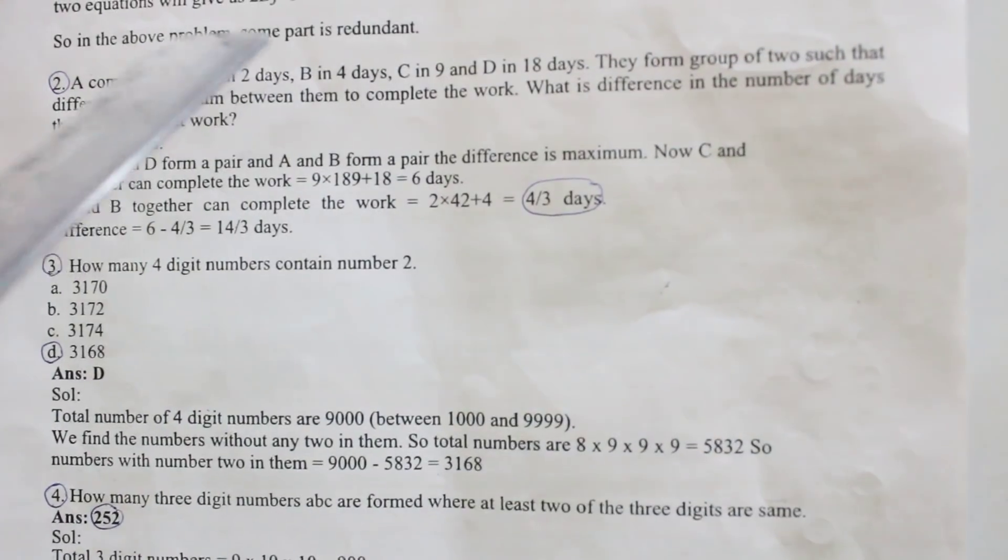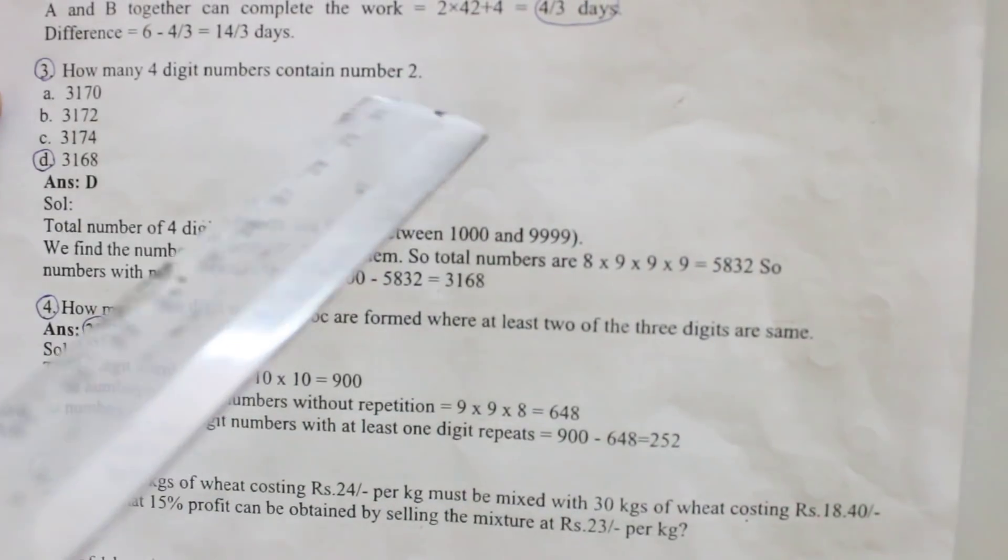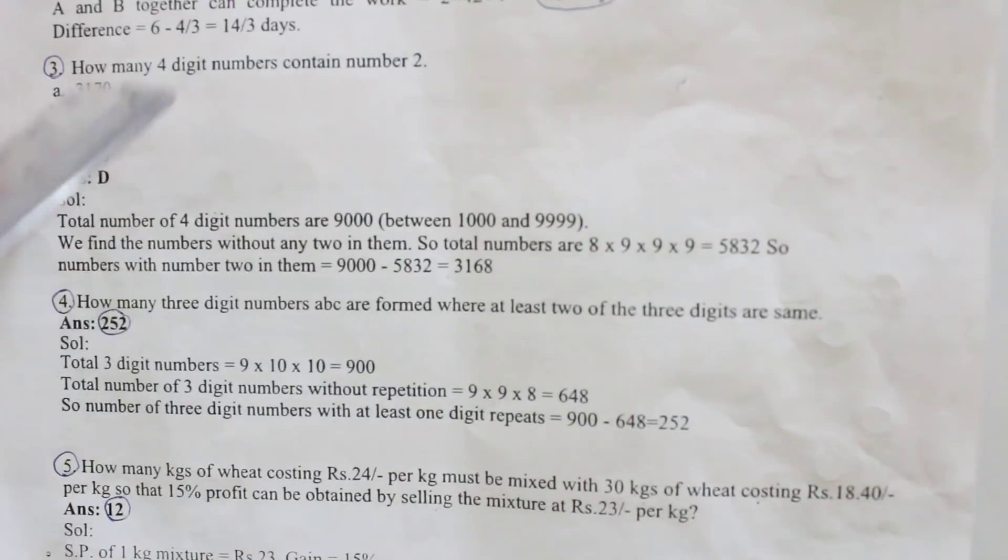The next third question: How many 4 digit numbers contain number 2? Your answer is D, 3,168.